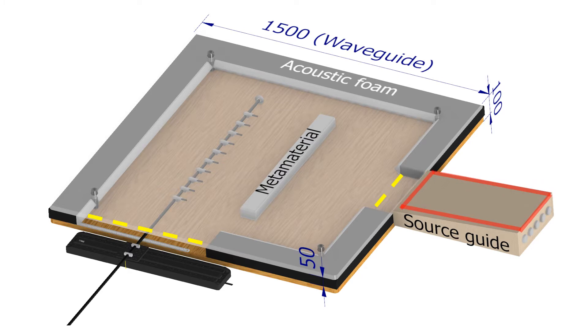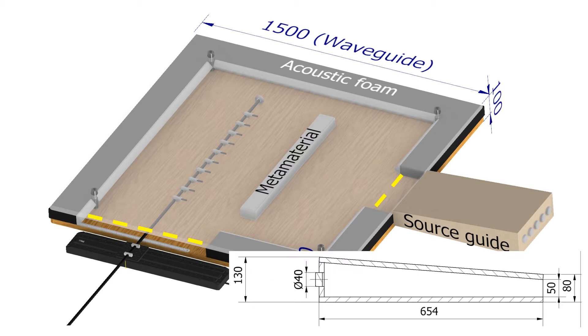The source guide is shown on the right. The plane wave is generated by five speakers attached to the back panel of the hollow source guide. The speakers were set to output a sinusoidal plane wave of 2.272 kHz.